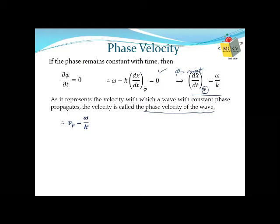Remember, this is the velocity with which normal waves propagate. Whatever electromagnetic wave you think of — light, X-ray, gamma-ray — whenever it is a single wave, its velocity is the phase velocity. In your Electronics and Communication course, you will come across phase velocity and group velocity many times in higher classes. So phase velocity vp = ω/k is the velocity of an electromagnetic wave when its phase remains constant with time.